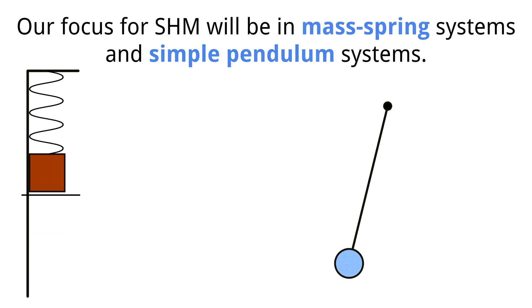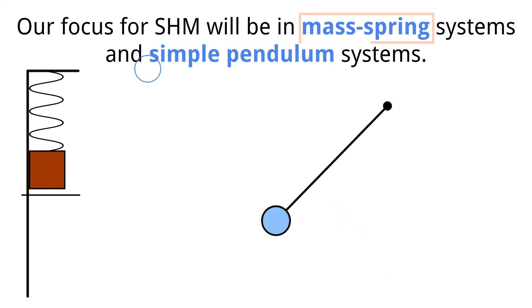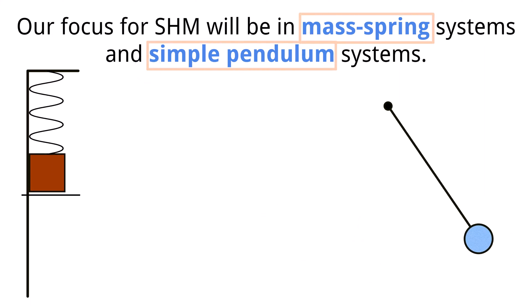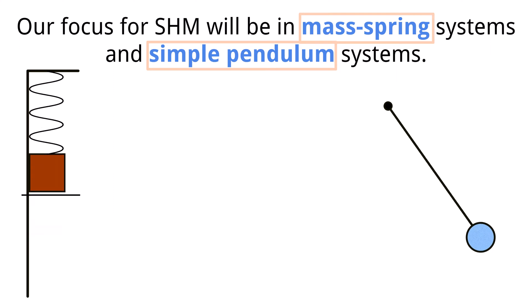The two kinds of simple harmonic motion systems we will be analyzing are a mass spring system and a simple pendulum. These may also be referred to as simple harmonic oscillators. Now let's discuss some of the important quantities necessary to analyze these systems.